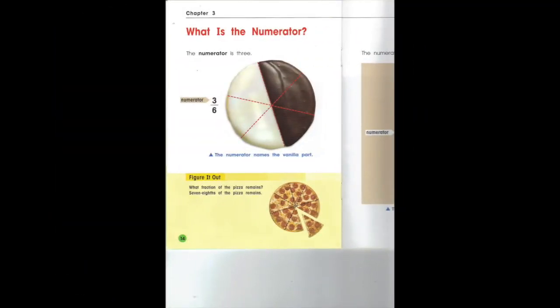Let's look at this cake. This cake is divided into six parts. Three parts are vanilla and three parts are chocolate. So this fraction is three sixths. The numerator is three — three represents the vanilla part.